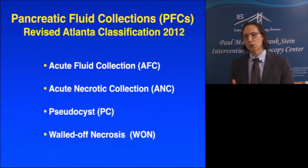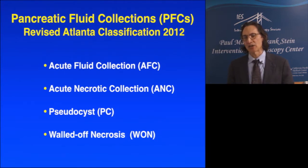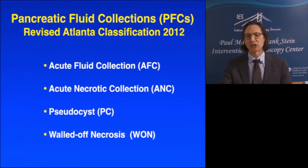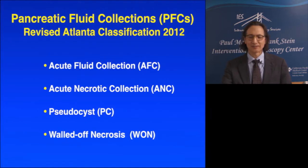This is why in 2012 the Atlanta classification was revised to distinguish four distinct types of fluid collections: an acute fluid collection, an acute necrotic collection, a pseudocyst, and walled-off necrosis.